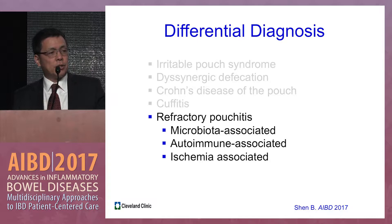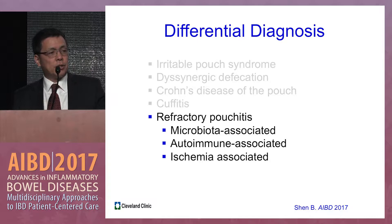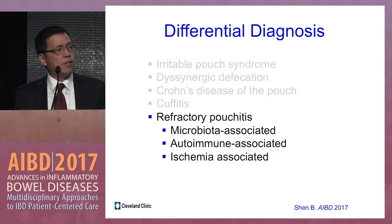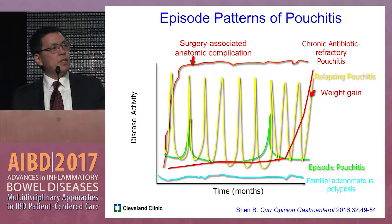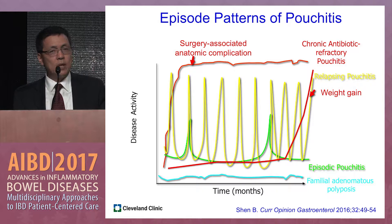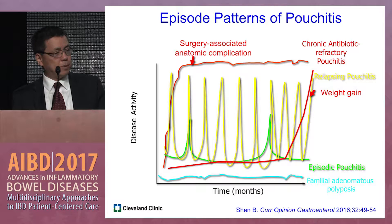Regarding refractory pouchitis — refractory to antibiotic and sometimes even steroid therapy — it is classified into three main categories: microbiota-associated, autoimmune-associated, or ischemia-associated. The disease pattern shows that patients with FAP rarely develop pouchitis, while others may have infrequent episodic flare-ups, or frequent flare-ups requiring maintenance therapy with antibiotics or probiotics.